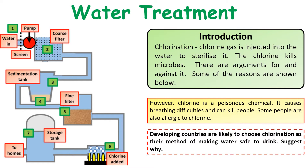An exam question that could come up is: developing countries are likely to use chlorination as a method to make drinking water safe — suggest why. The main reason is that chlorine can be added easily; it doesn't require a huge expenditure on building a water treatment plant. You can use chlorine pills, dropping a small amount into the water to sterilize it. So the main reason is that it's a much cheaper option than other methods.